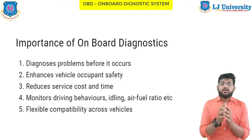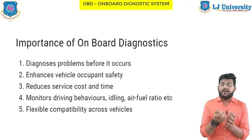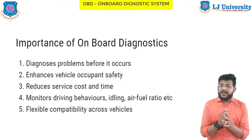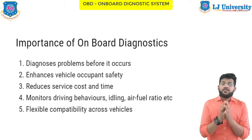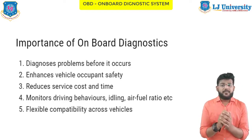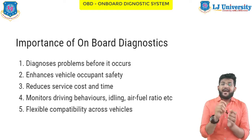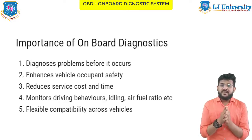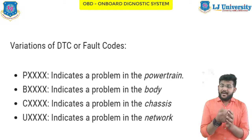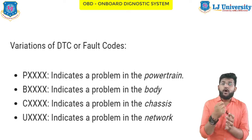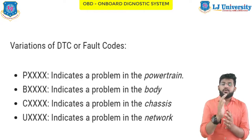The main importance of On-Board Diagnostics includes: diagnosing problems before they occur, enhancing vehicle occupant safety, reducing service cost and time, and monitoring driving behavior, idling, and air-fuel ratio. OBD also offers flexible compatibility across all vehicles. The OBD system senses data from all components of the car, and whenever a malfunction is detected, a Diagnostic Trouble Code (DTC) is generated. These codes can be either generic or unique as defined by the vehicle manufacturer, and a mechanic uses an OBD scanner to check these fault codes and pinpoint the root cause.